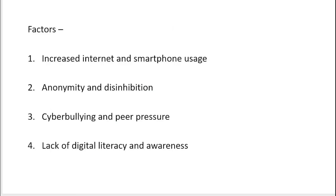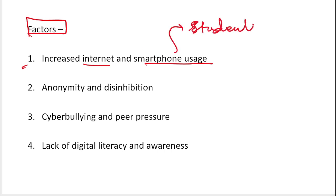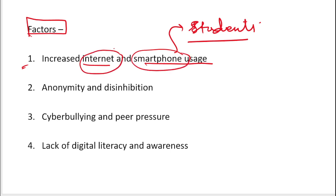Now, moving to the factors contributing to the rise of technology-facilitated sexual violence. The first factor is increased internet and smartphone use. Internet and smartphones are easily accessible to students. When we were kids there were no smartphones, but now even students in junior classes have their own personal smartphones, which is one of the major reasons for the rise of TFSV.